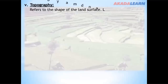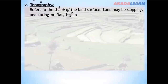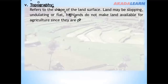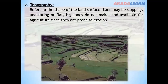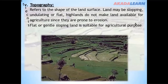Topography refers to the shape of the land surface. Land may be sloping, undulating or flat. Highlands do not make land available for agriculture since they are prone to erosion. Flat or gently sloping land is suitable for agricultural purposes since it is less prone to erosion.